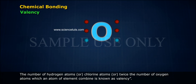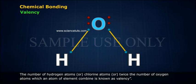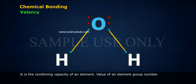Valency is the number of hydrogen atoms or chlorine atoms, or twice the number of oxygen atoms, with which an atom of an element combines. It is the combining capacity of an element.